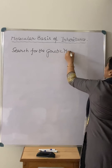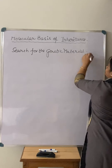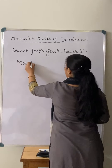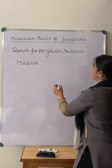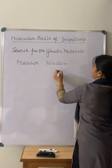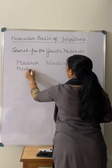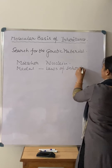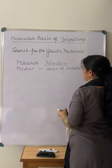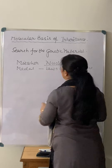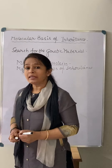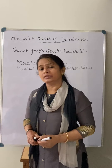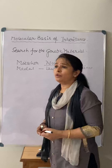As you know, Mendel proposed the laws of inheritance around 1866-1869, and there was another person named Miescher who discovered the structure we now call the nucleus. Both of them were saying the same thing — that inside the nucleus there is a structure responsible for inheritance. Mendel called it a 'factor,' but nobody was able to identify which substance was actually responsible for inheritance.